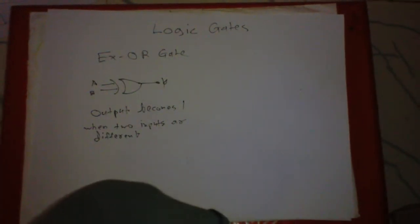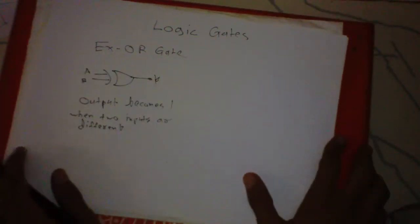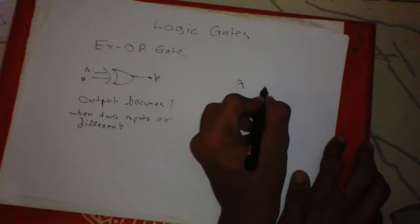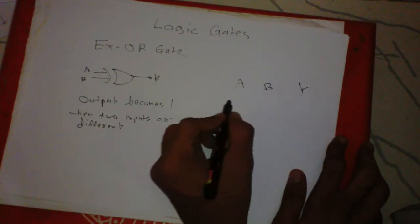Let's simplify this into a table: A, B, Y. Zero zero zero, zero one one, one zero one, one one zero.